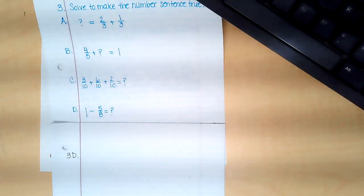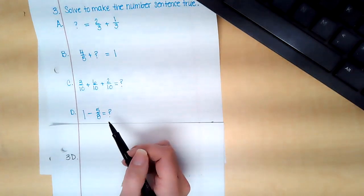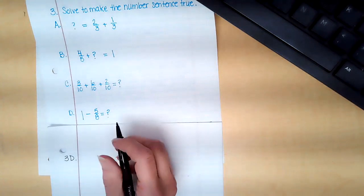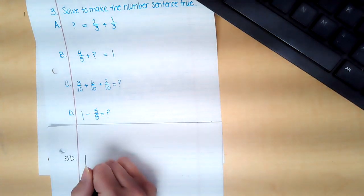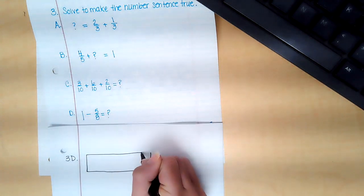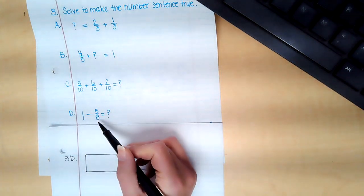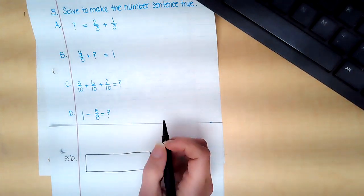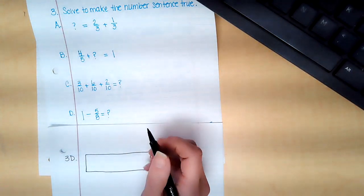Okay, I'm going to continue. We're going to start with number three, problem D. It says one minus five eighths equals question mark. So on this one I'm going to draw an area model, and I see five eighths, so I want to make my pieces or parts into eighths.